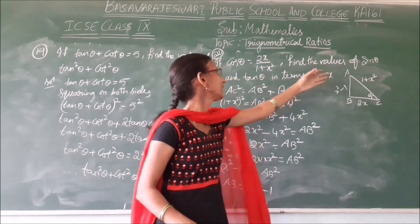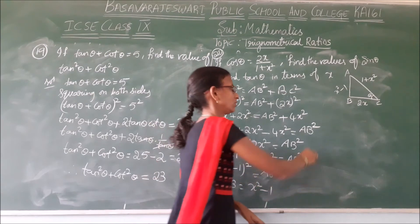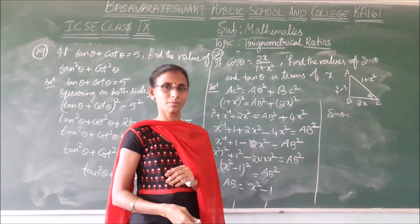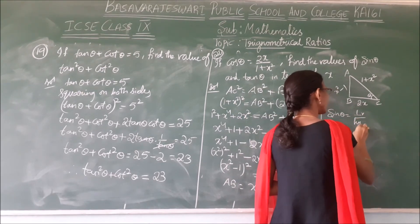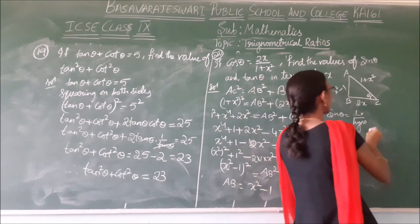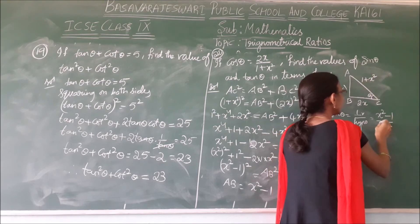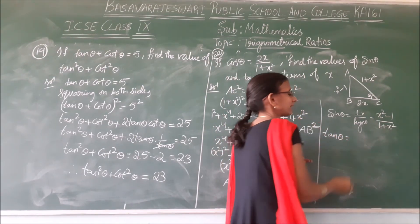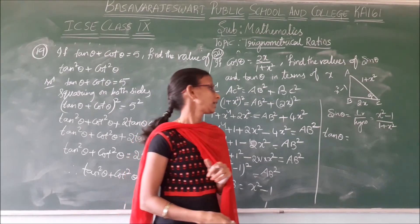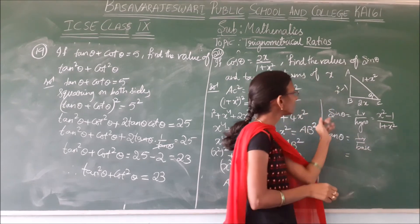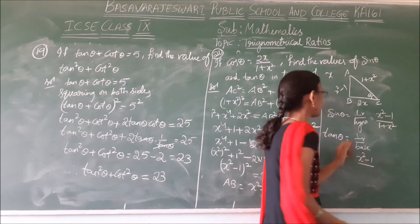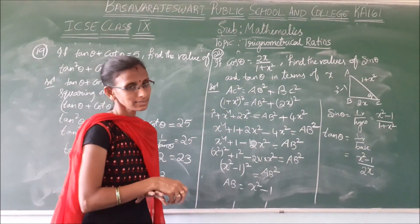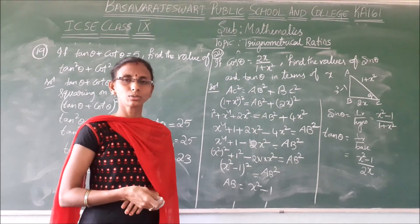Now we know all three sides of the triangle. Sin theta means perpendicular by hypotenuse. The perpendicular is x squared minus 1, and the hypotenuse is 1 plus x squared. So sin theta equals x squared minus 1 by 1 plus x squared. This is how we find the values. The exercise ends here and we can continue in the next session. Thank you.